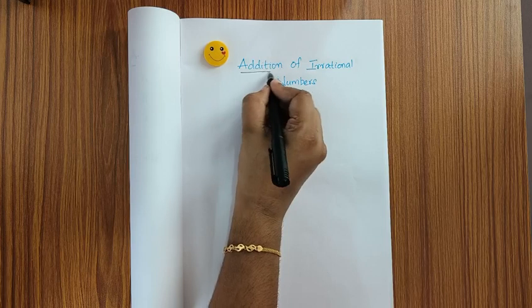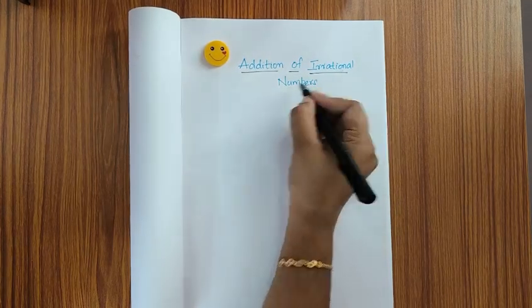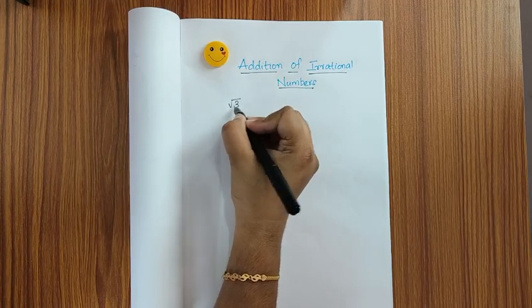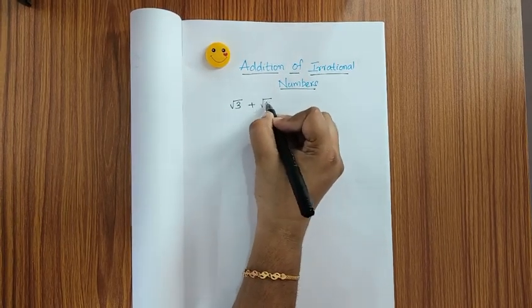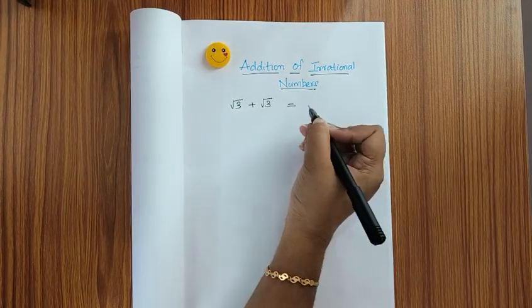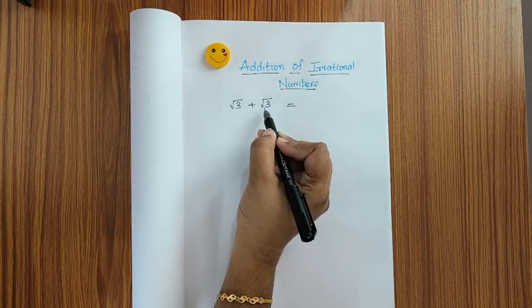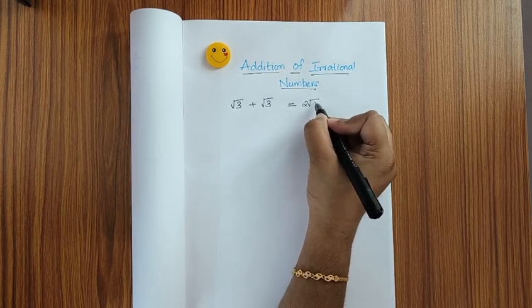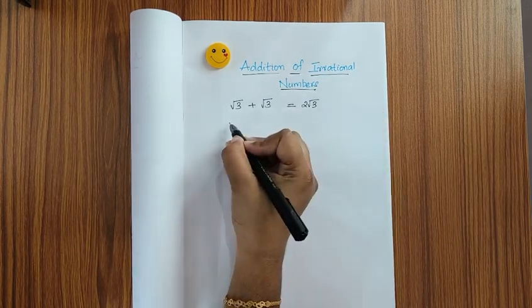Hi everybody, let's see addition of irrational numbers today. Root 3 plus root 3. What will be the sum here? 1 root 3 is added to another root 3, so it makes 2 root 3. So what about